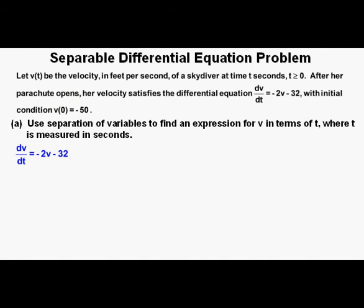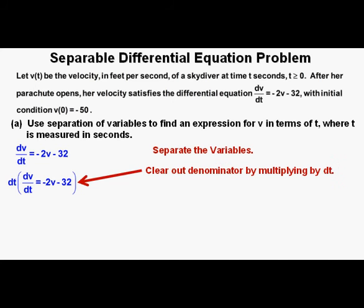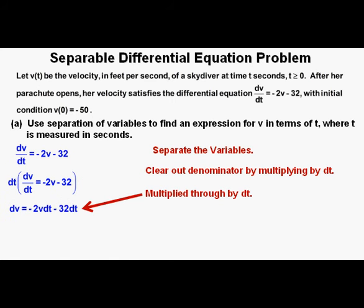Here's the differential equation from which we'll work: dv/dt equals negative 2v minus 32. The first thing we'll do is separate the variables. We need to separate the dt and the dv, and the first way I can see to move in that direction is to multiply the equation by dt, the denominator of the left side. We have dv equals negative 2v dt minus 32 dt.